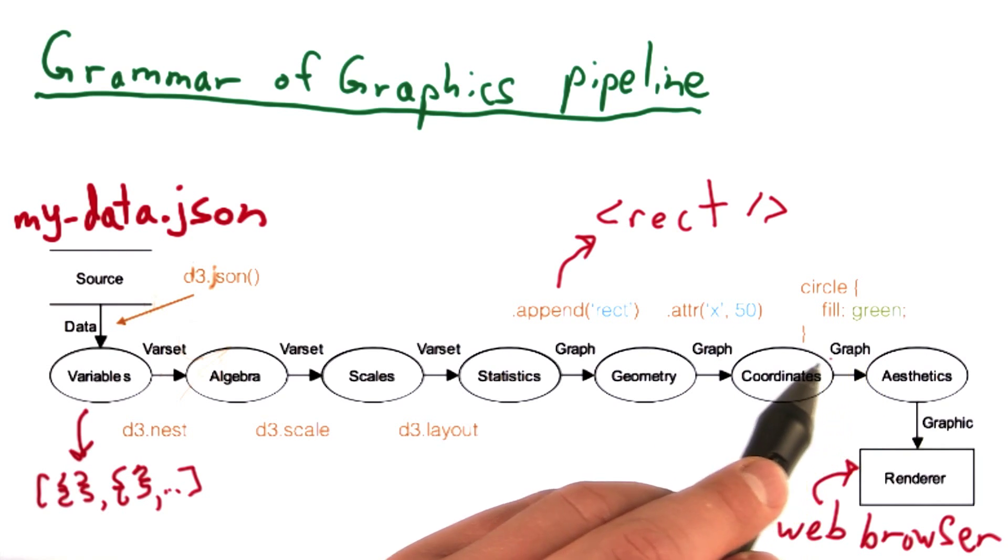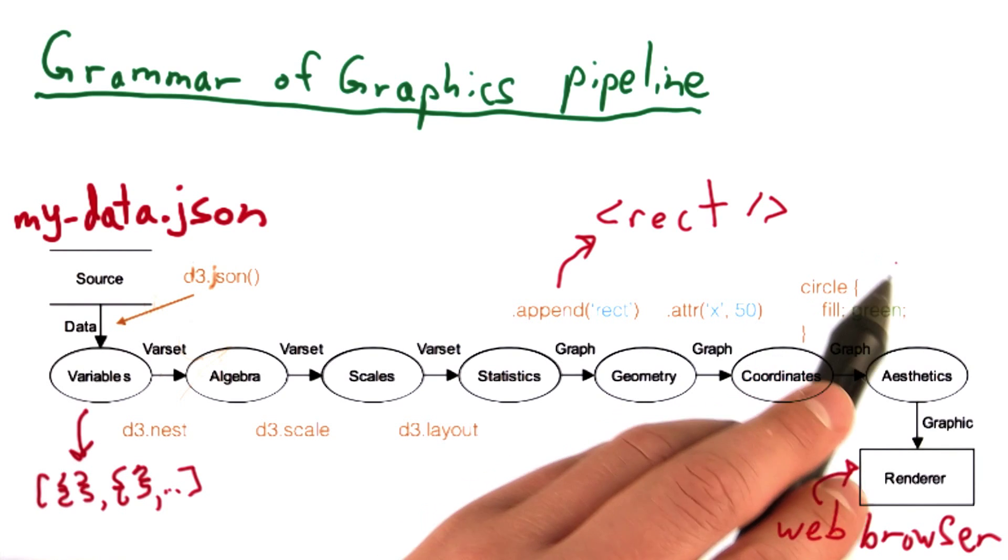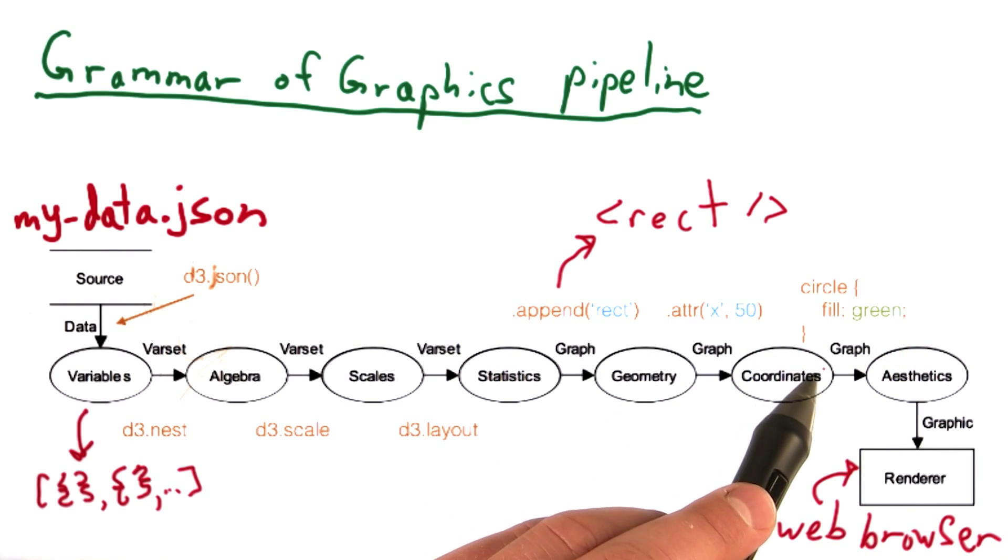Last but not least, we can control the aesthetics of our visualization, either through D3 by specifying attributes on the style, or by using CSS selectors and CSS specification to, in this case, fill our rectangle with a green color.